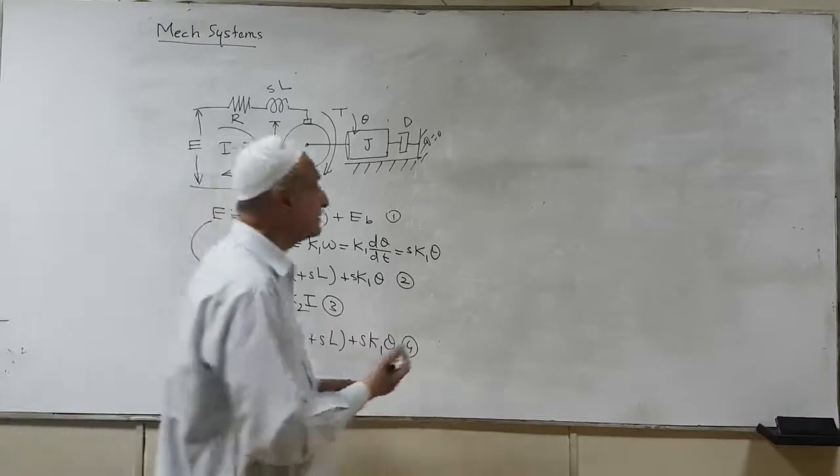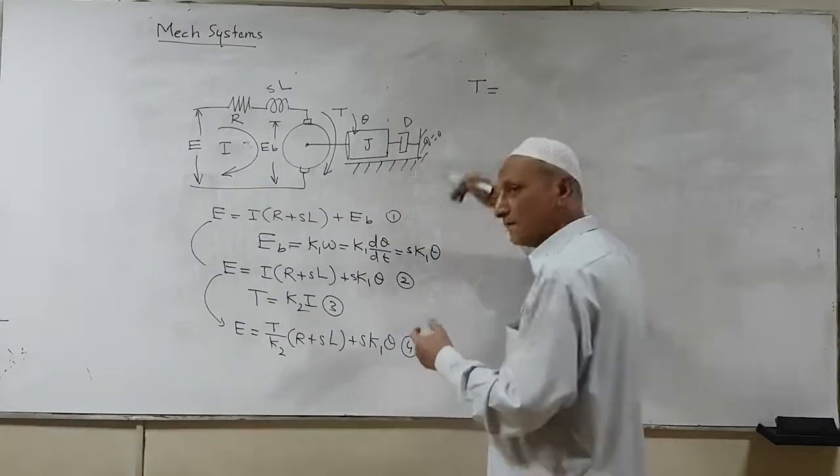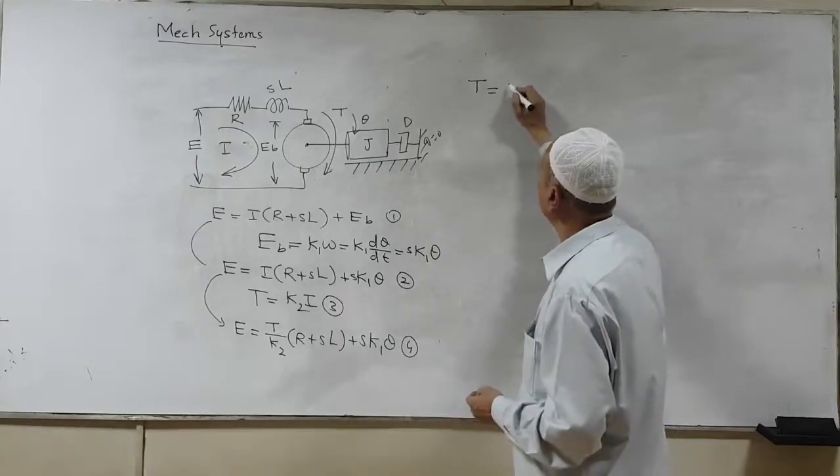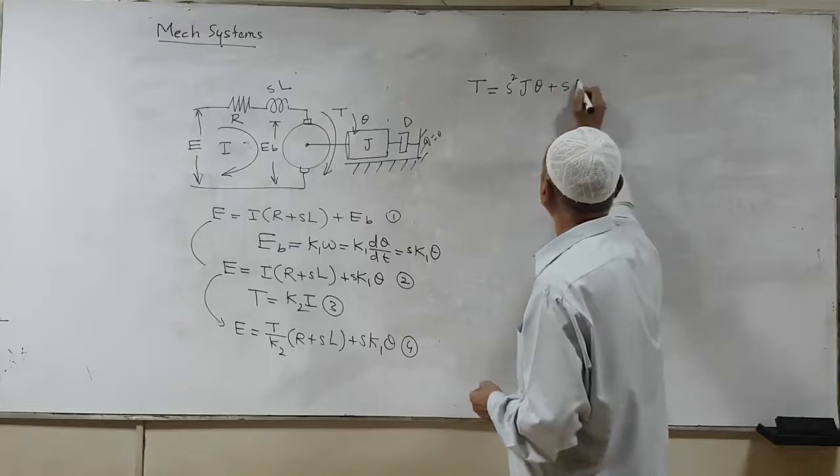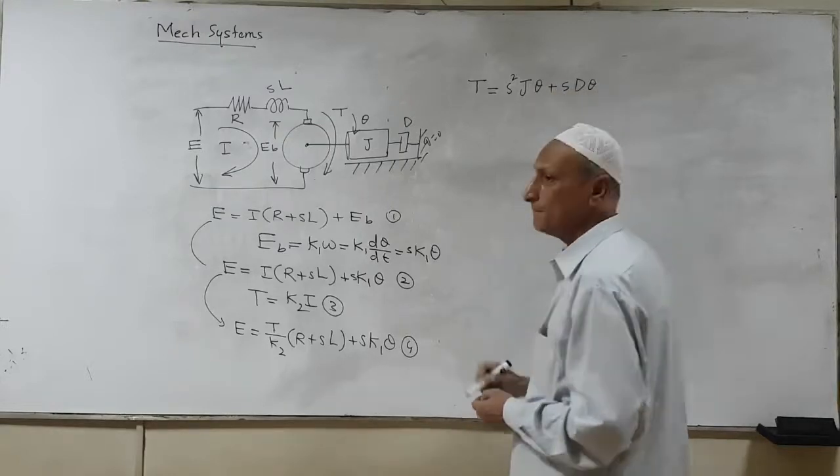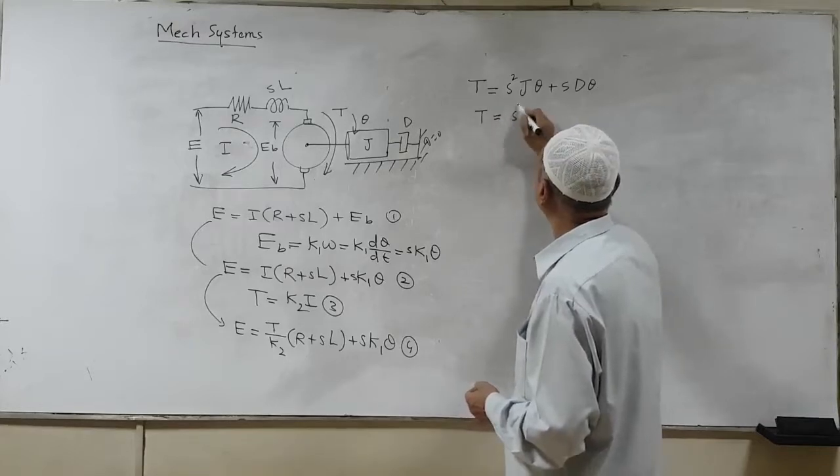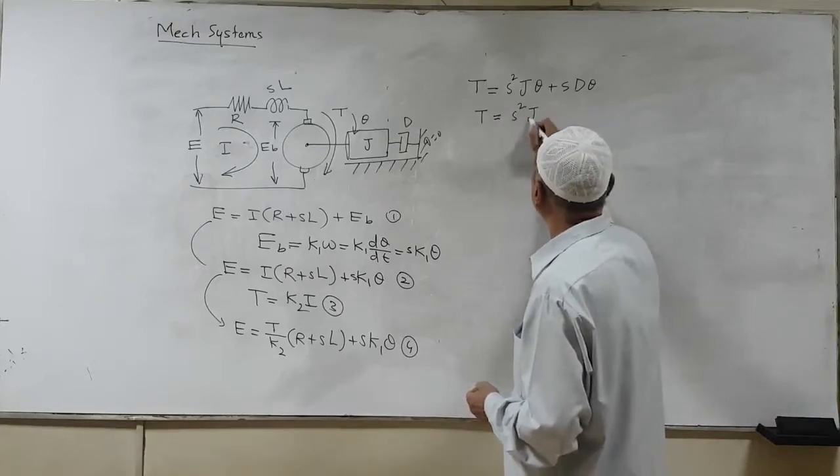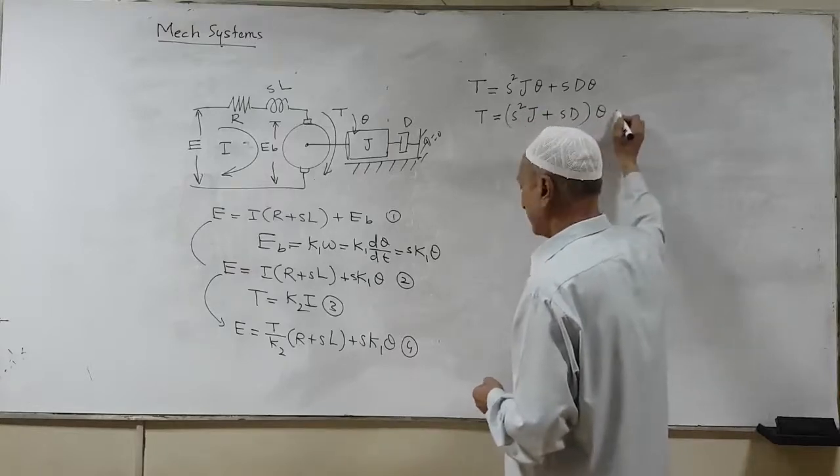Now, on the mechanical side, there is a torque, so the equation is simple. Now, I'll write directly in terms of Laplace transform. So we have S square J into theta plus S D theta. Or we can say T is equal to S square J plus S D into theta. This is equation 5.